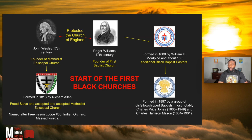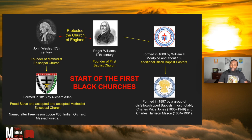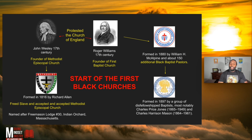Then the COGIC — Church of God in Christ — was established in 1897. The reason being, there was a group of Black folks like Charles Prince Jones and Charles Harrison Mason who got booted out of the National Baptist Convention. So they went out and started their own. They didn't like the doctrine, couldn't get along — whatever the case may be — and started their own organization.